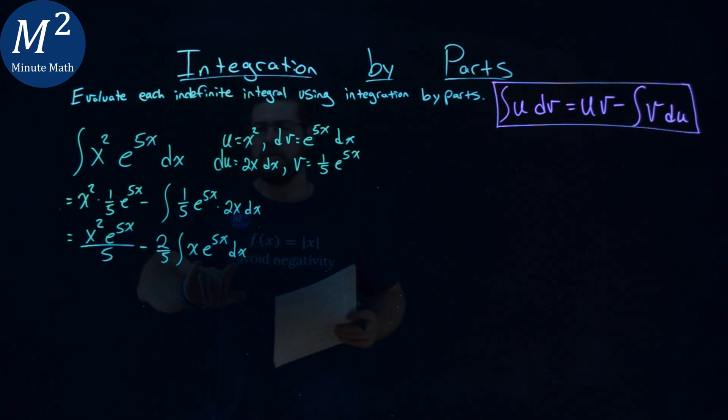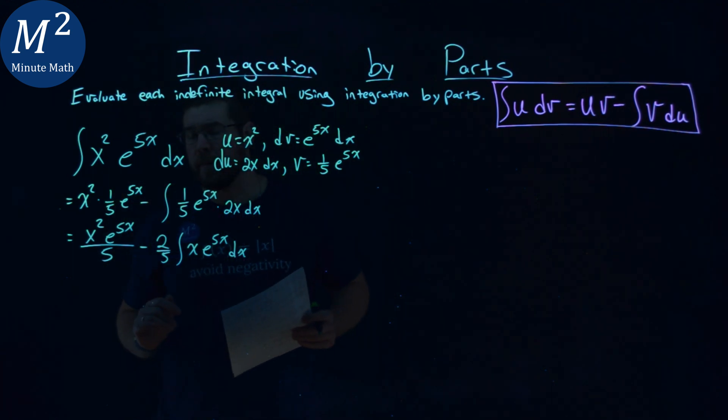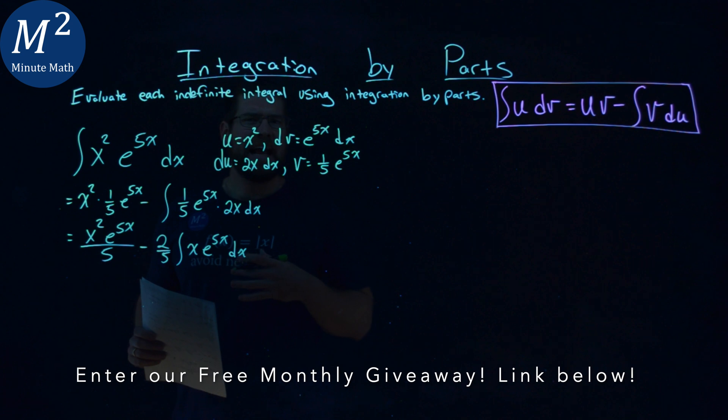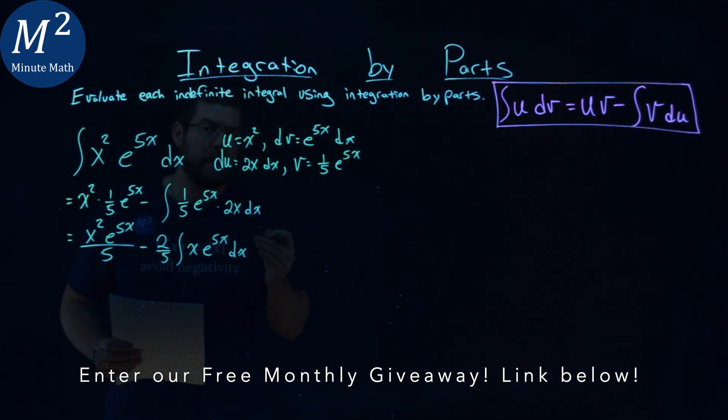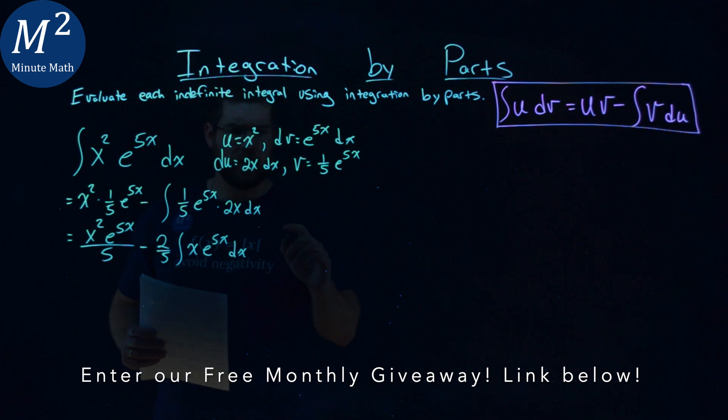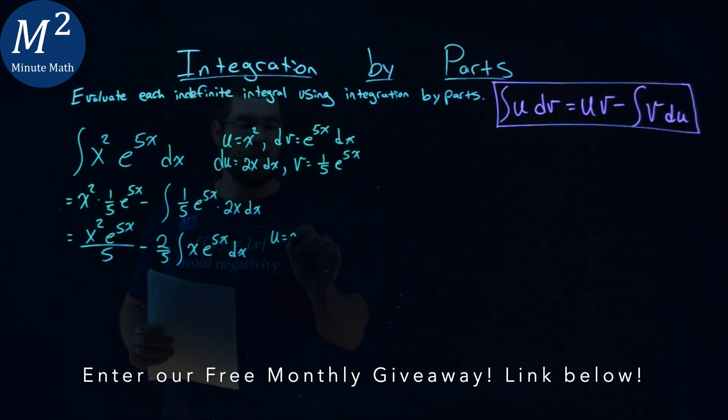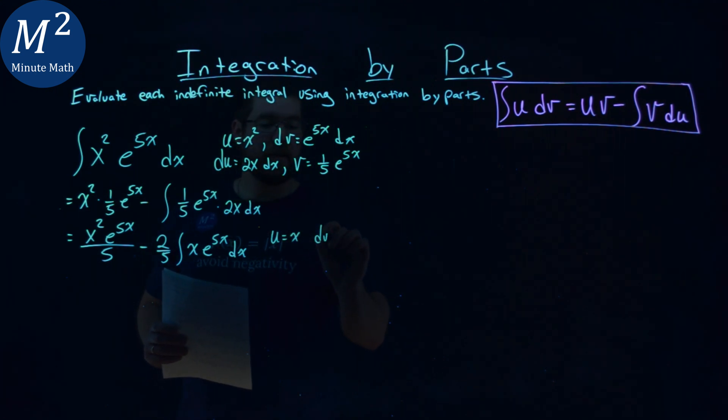Notice this looks very similar to our beginning integral. It might seem that we're not getting anywhere, but we are. We actually need to do integration by parts again. Let's set a u value to be x,